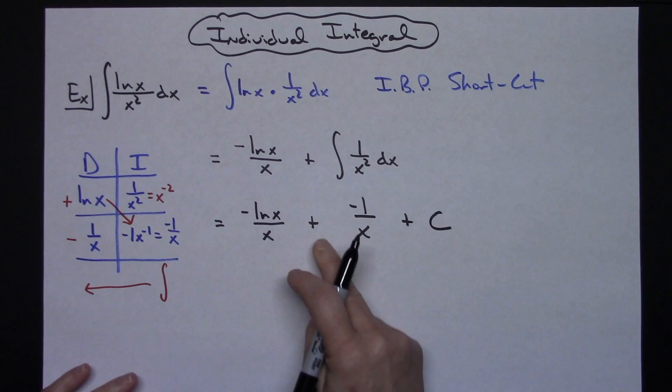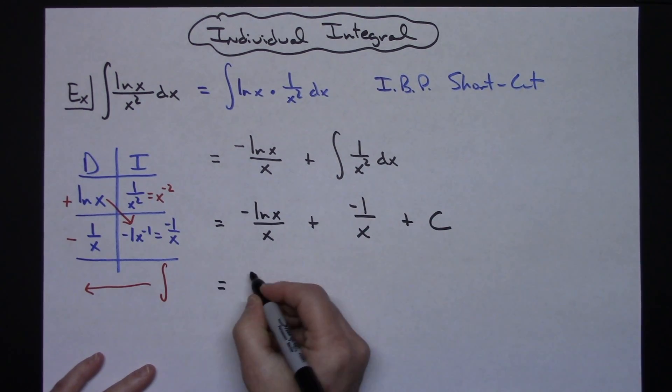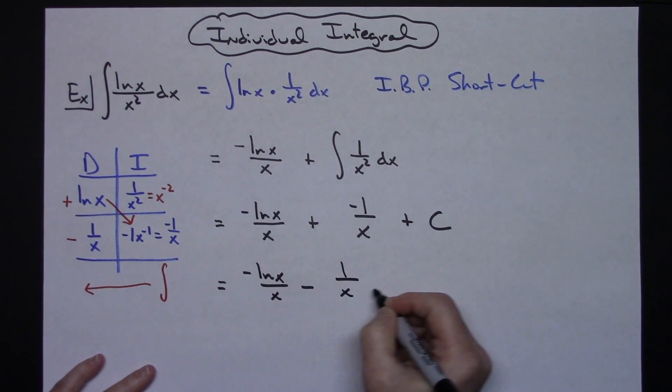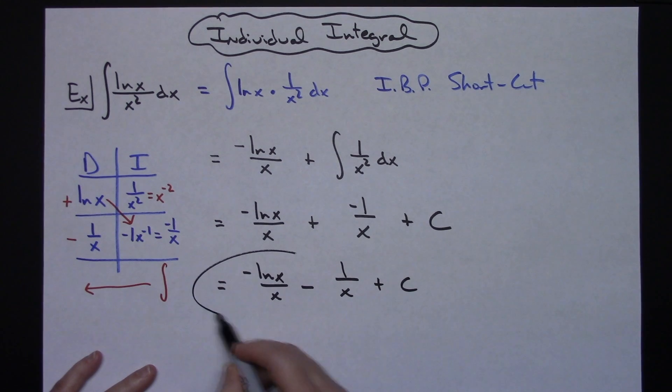If you wanted to rewrite that with a minus in there you could, but you wouldn't necessarily have to. So negative natural log of x over x minus one over x plus C for a final answer.